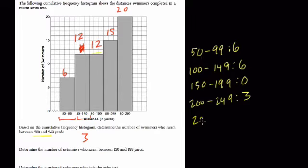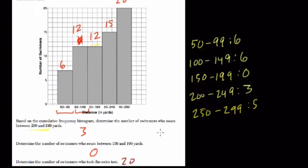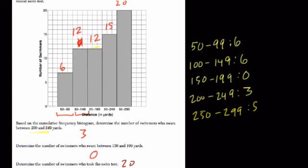And then in the last interval, we have 250 to 299, and there are five more because the total rises by five. Determine the number of swimmers who swam between 150 and 199. That's zero, right? No one was added there. Tell the number of swimmers who took this one. So how many are there in total? They're going to be 20. It's the final bar of the cumulative frequency histogram, but we can count up the total anyway. Six and six is 12, plus these eight right here is 20 people.